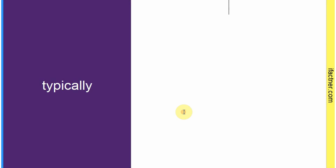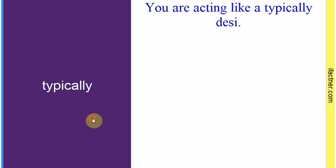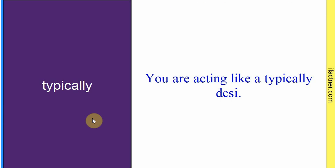Word hai: 'typically'. Sentence banaate hain meaning samajhne ke liye: 'You are acting like a typically desi.' Khas taur pe jab bahar ke desi ho — India ya Pakistan ke log — toh hum keh sakte hain 'You are acting like a typically desi.' Toh 'typically' ka matlab hota hai 'aam taur pe'. Sentence banaaya: 'You are acting like a typically desi.'